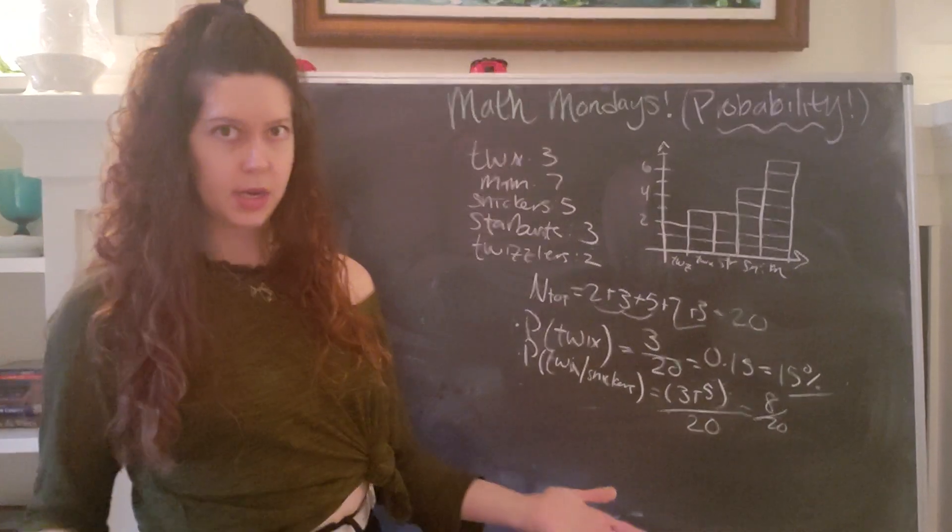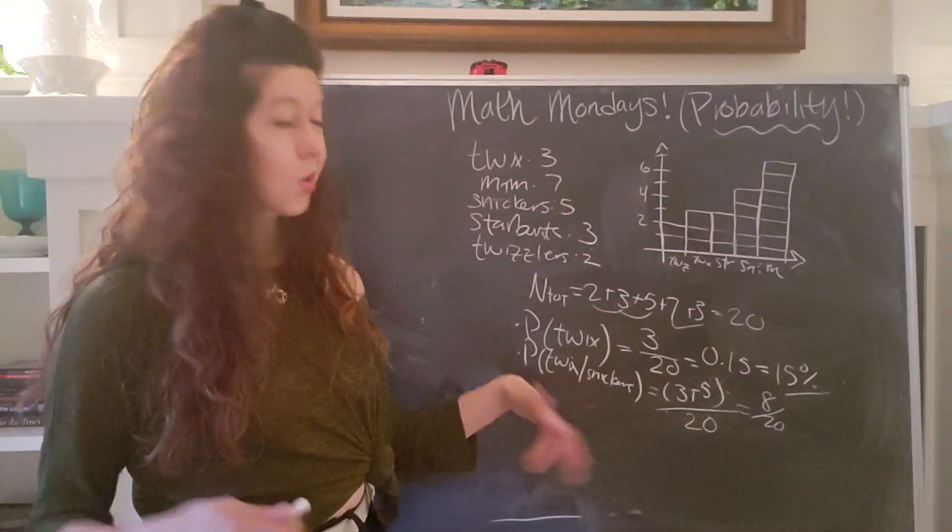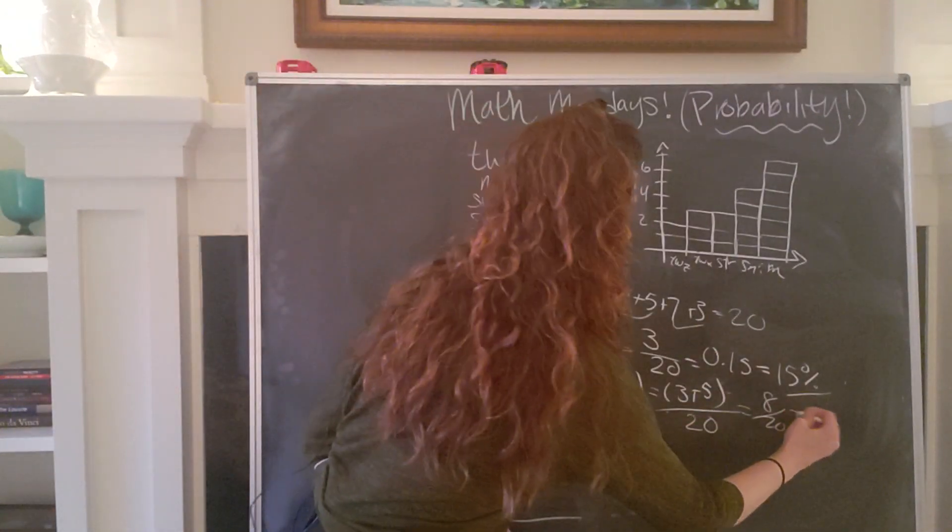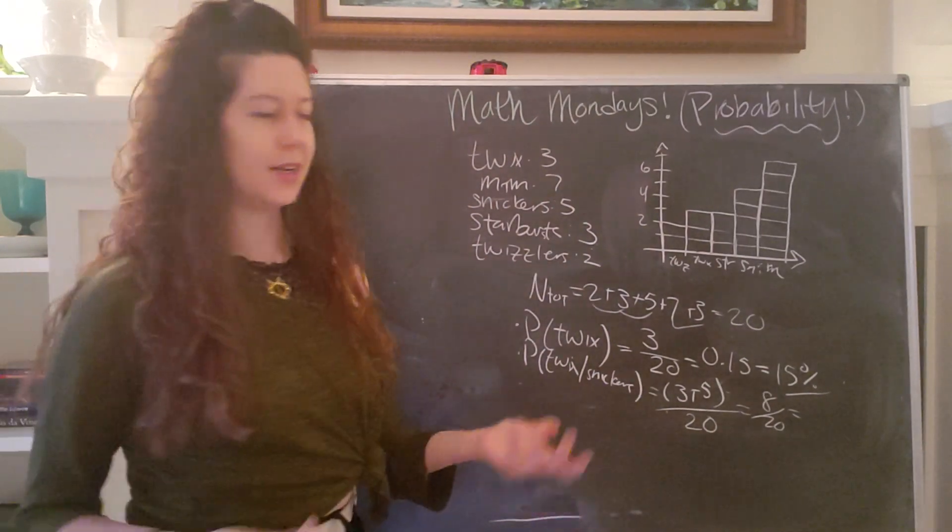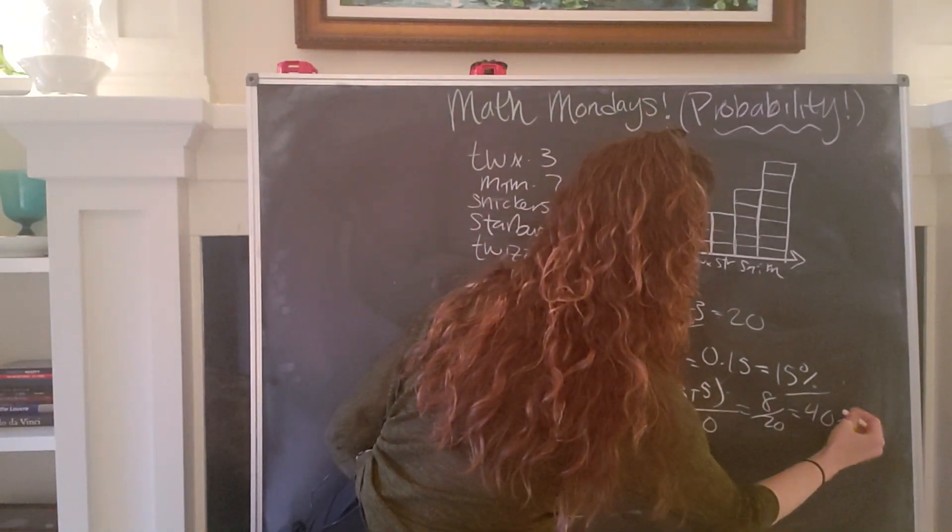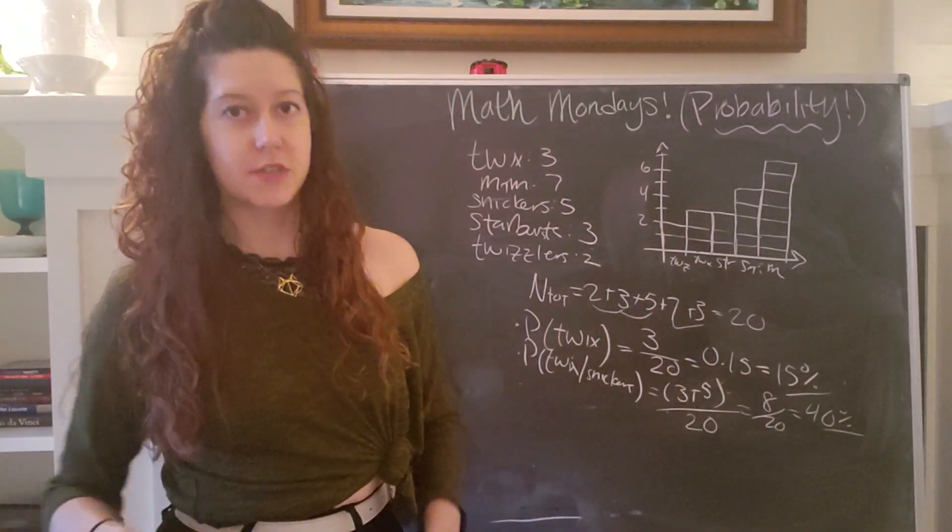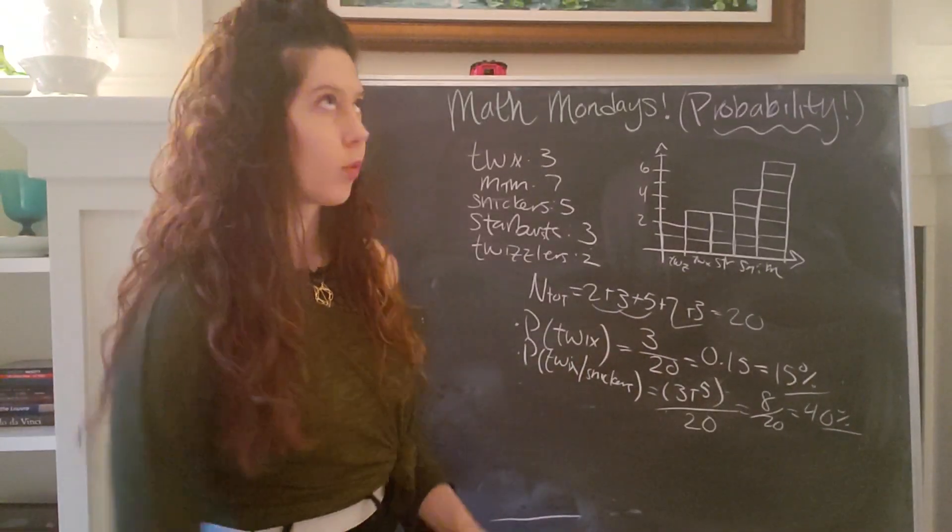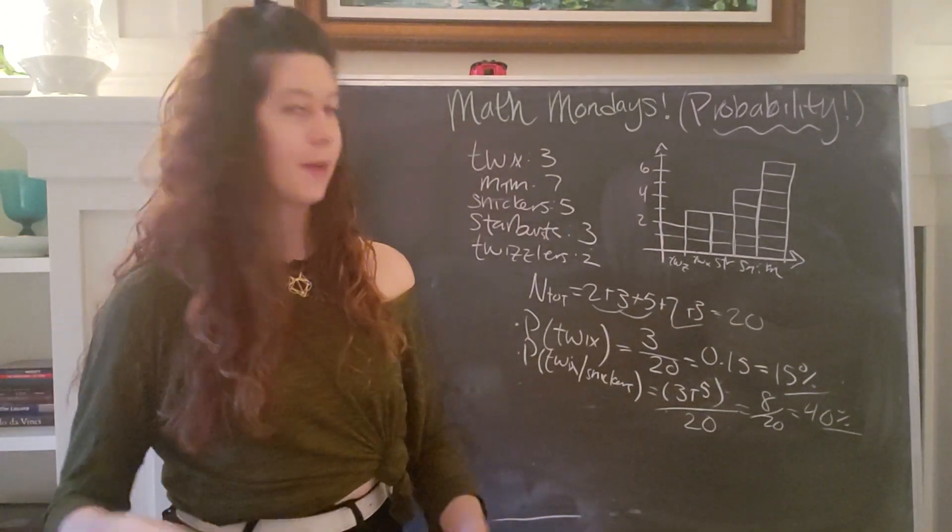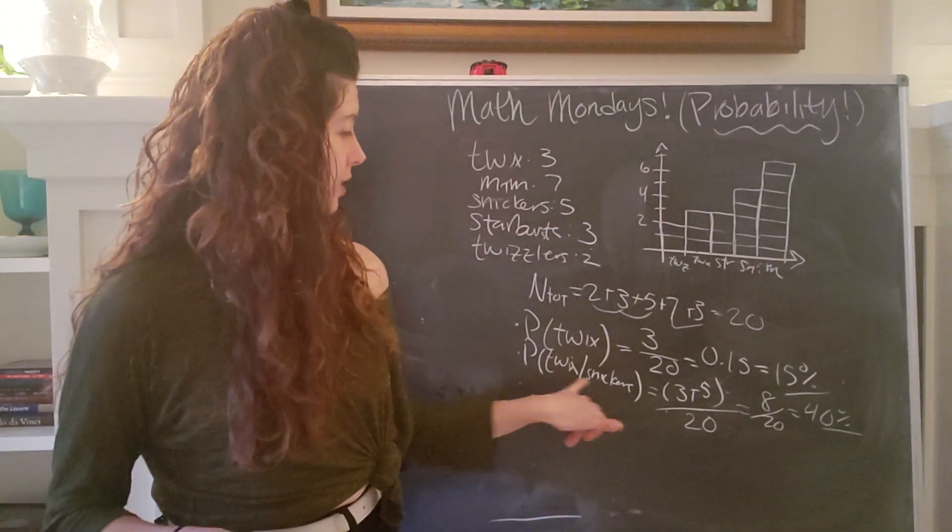And so we simplify as eight over 20. And so in this case, the probability of getting a Twix or a Snickers, because I've opened up my palette a little bit, is 40%. So four times out of 10 or 40% of the time, if I randomly reach into that bag and pull out a piece of candy, it's going to be a Twix or a Snickers.